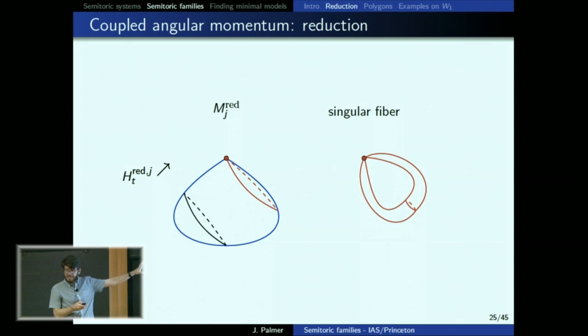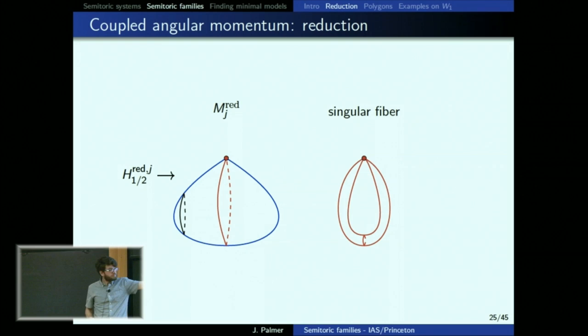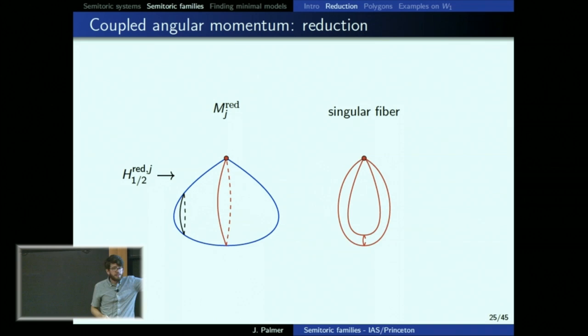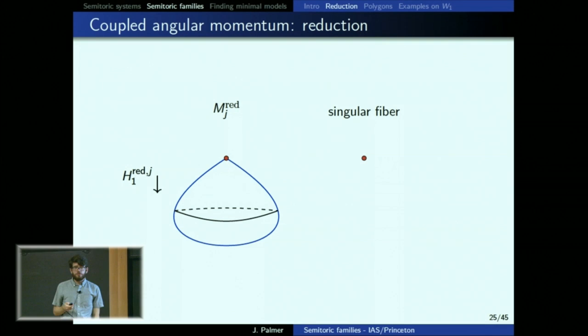As you continue increasing t in the coupled angular momenta, the torus gets bigger. Then increase time more and the torus starts to get smaller until you've hidden the badness back inside a point — now it's the minimum of H instead of the maximum. This is exactly that transition: a dot on the top goes down and becomes a dot on the bottom, and in between it generates pinched tori.